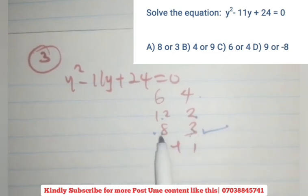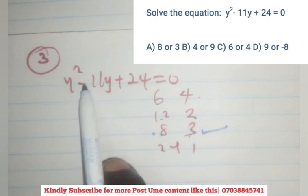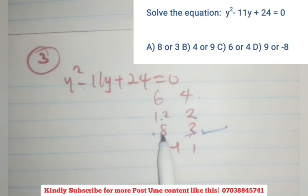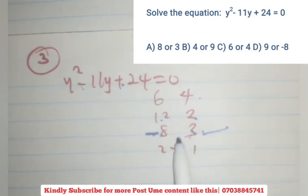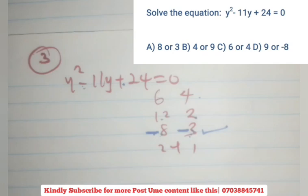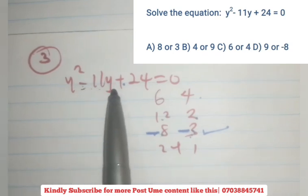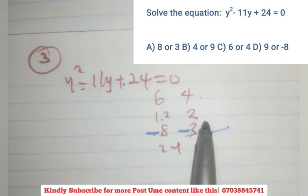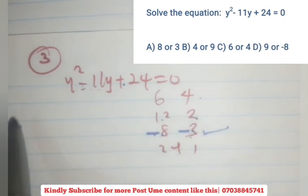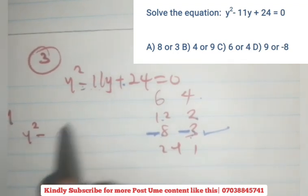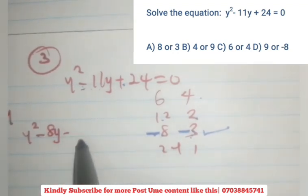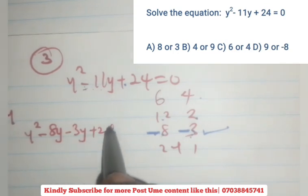Now since you've known the number to use, the next thing is the middle term here, which is negative. Give it to the bigger number. 8 and 3, 8 is the bigger number. So this negative sign, give it to 8. Then minus times plus, give it to the smaller one. So now you're not going to be writing minus 11y again. What you'll be writing now is minus 8y and minus 3y. So you have y squared minus 8y minus 3y plus 24 equals 0.